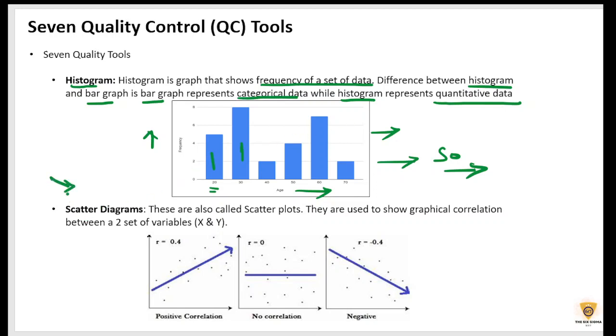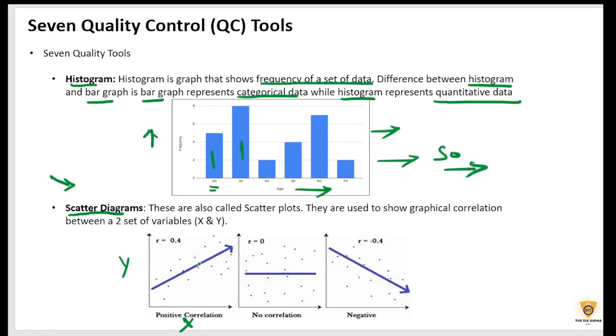So this is the difference between a histogram and a bar graph. Now, let's move to the next quality control tool. It's the scatter diagram. Well, scatter diagram, if you remember correlation, we have studied a few weeks before. I will put it in the description. So to check the correlation between two variables, x and y, we go ahead and use scatter diagrams, right?